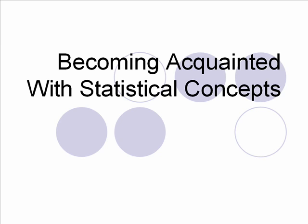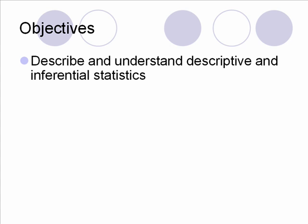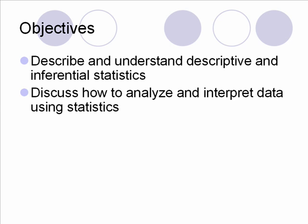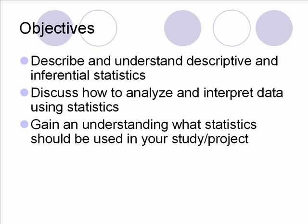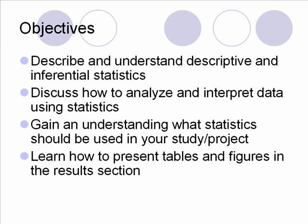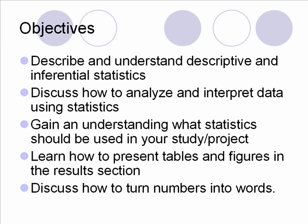Tonight, or today, we're going to talk about statistics. Chapter 6 in the textbook is becoming acquainted with statistical concepts. We'll actually have two different parts to this presentation. Part 1 is a little bit longer than part 2. Our objectives for this lecture are first to describe and understand descriptive and inferential statistics, to discuss how to analyze and interpret data using statistics, gain an understanding of what statistics should be used in your study or project, learn how to present tables, figures, and the results section. This kind of goes back to last week's chapter on the methods chapter, but this is really going to be chapter 4 for the spring. And then we're going to discuss how to turn numbers into words.